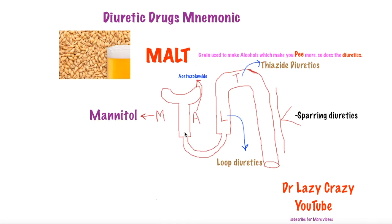Next, L represents Loop diuretics. They basically work on the sodium-potassium-chloride pump. They block these ions from being reabsorbed, so when the ions stay inside the tubule, water follows them to maintain stable osmolarity.